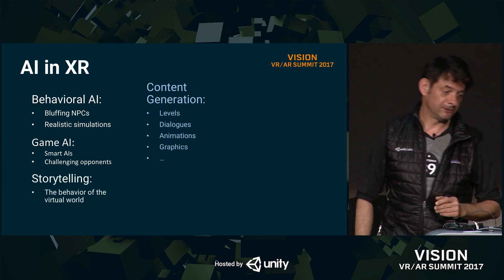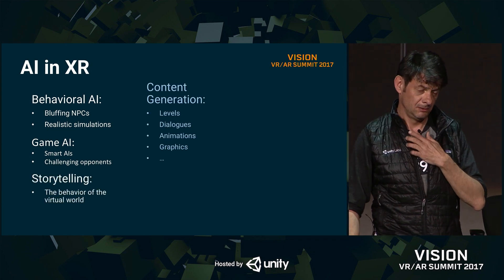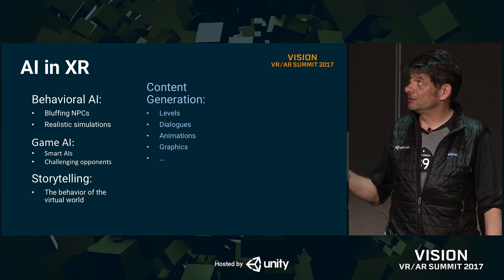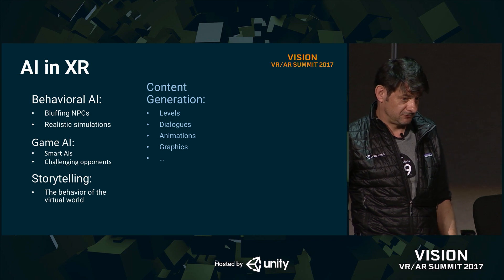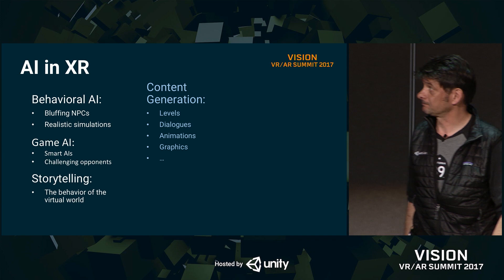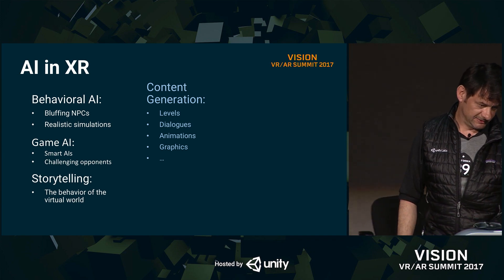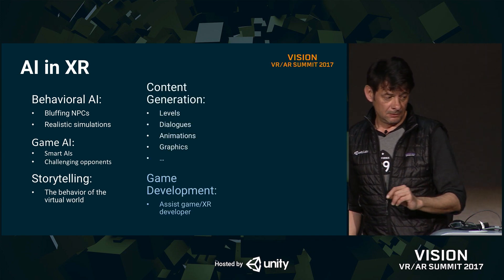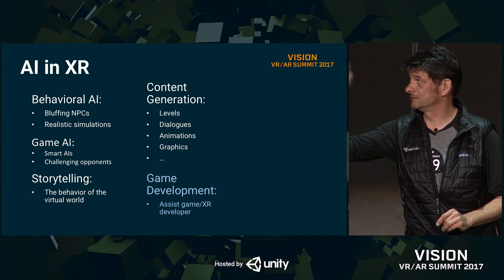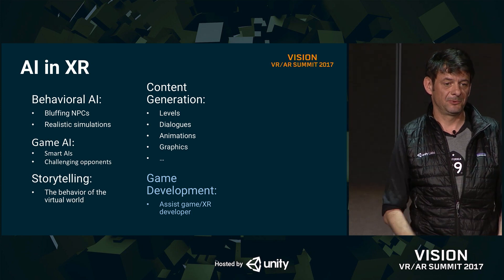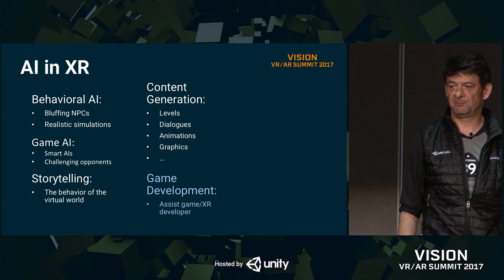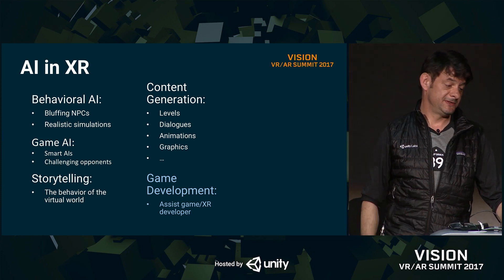Next point: content generation. This is a big one. Lots of research is going on towards automatically generating levels for a game, dialogues, animations — which is a big thing — and graphics. A point which is particularly important to people at Unity is assisting the game and XR developer when they are building. How can we recommend assets? How can we recommend approaches? I won't speak much about this one today.